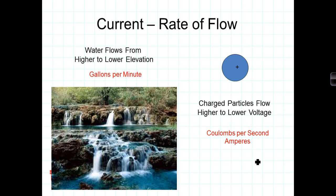So we now have a sense of voltage as a potential at some level relative to a reference. Frequently, we want to make current flow. Our elevation analogy makes good sense: water flows downhill, from a higher elevation to a lower elevation. Similarly, in an electrical system, charged particles flow from a higher voltage to a lower voltage.